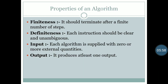Next are the properties of an algorithm. First: finiteness. An algorithm should terminate after a finite number of steps. This is a very essential thing — the algorithm must stop after some number of steps, whether it is 30, 40, or 50 steps. The algorithm will be finite.